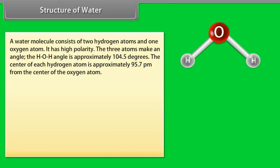Structure of water: A water molecule consists of two hydrogen atoms and one oxygen atom. It has high polarity. The three atoms make an angle. The H-O-H angle is approximately 104.5 degrees. The center of each hydrogen atom is approximately 95.7 picometers from the center of the oxygen atom.